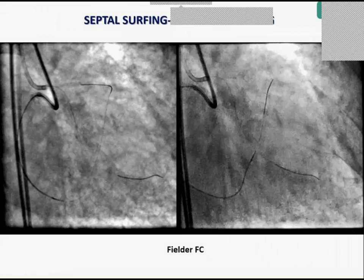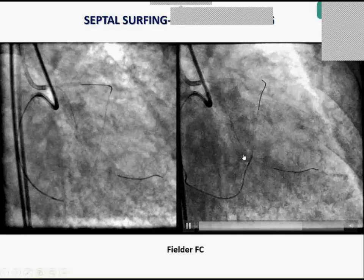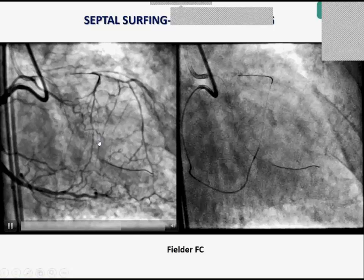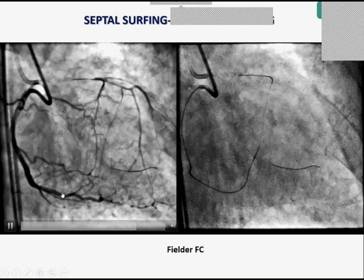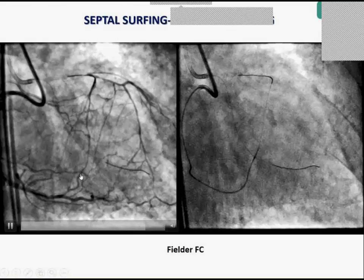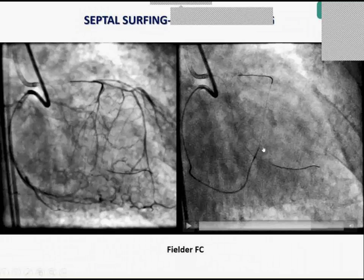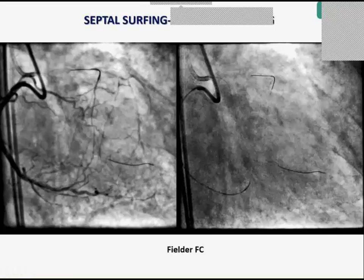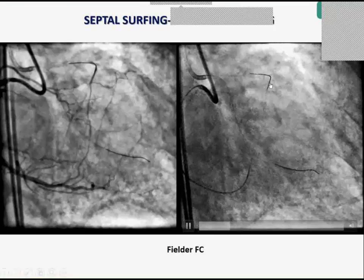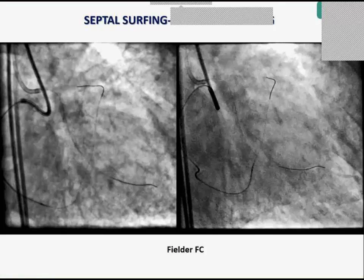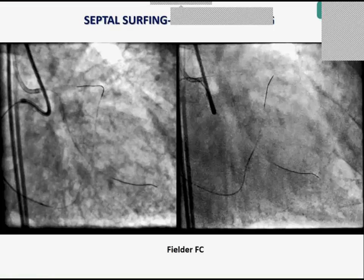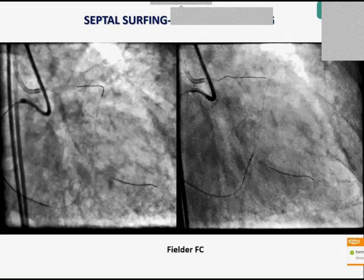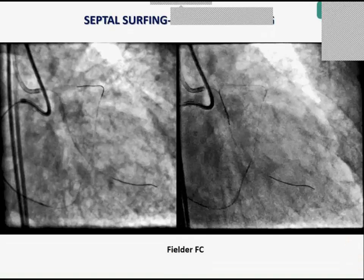What happened here: the surfing was easy and crossing was immediate into a small branch, but we paid a price. Had we followed the larger visible branch, advancing the Corsair microcatheter would have been much easier. Instead, we were stuck in this non-visible collateral. We pushed the microcatheter, the Fielder RC buckled back, the guiding catheter came back. Then we just kept pushing the wire antegradely — and suddenly, to our surprise, the same Fielder RC wire that crossed the collateral jumped through the occlusion.